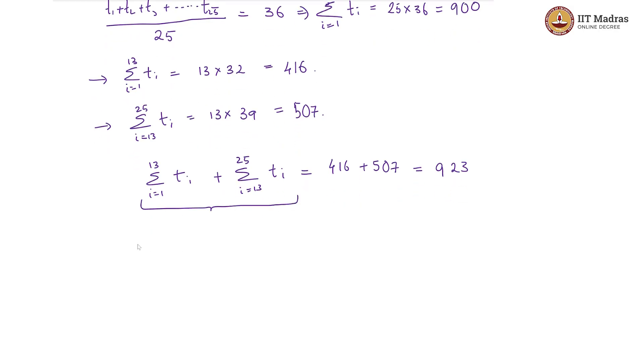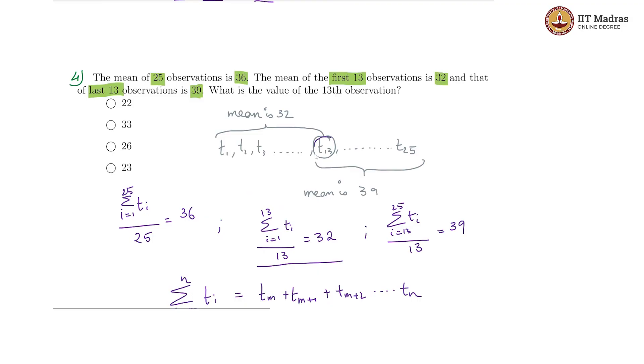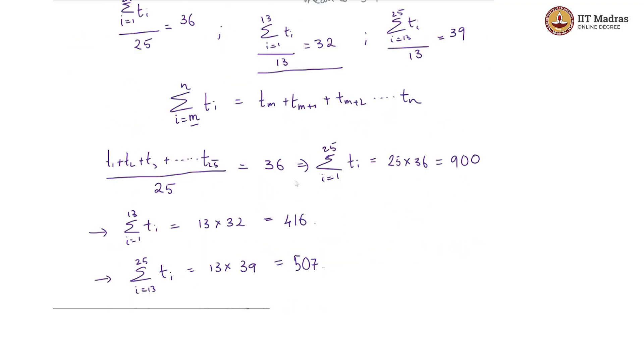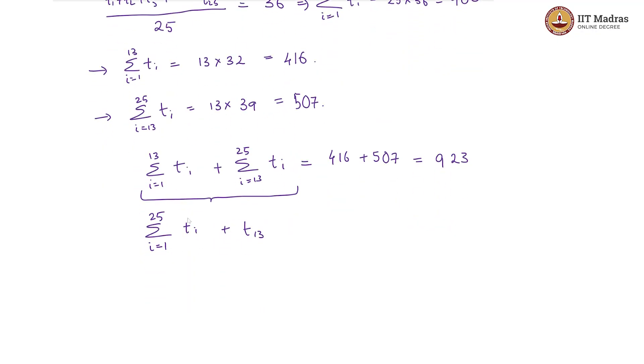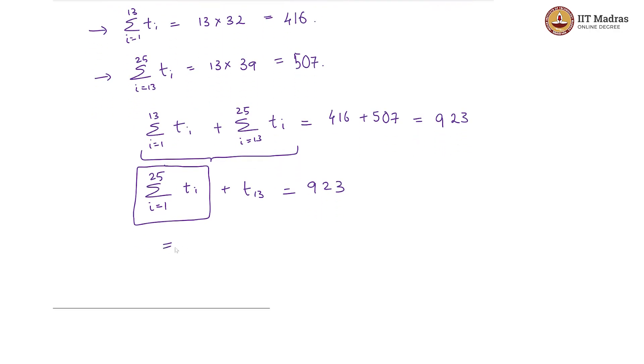However, these two put together are basically sigma i goes from 1 to 25 t i plus t 13, because our t 13 is showing up once in both of these summations. Therefore, when I combine them, one t 13 goes into the total summation and the other extra is lying here. So, this is going to give us 923. And this sum, the total sum we know is 900, which means 900 plus t 13 is equal to 923. And that indicates that t 13 must be 923 minus 900, which is 23.